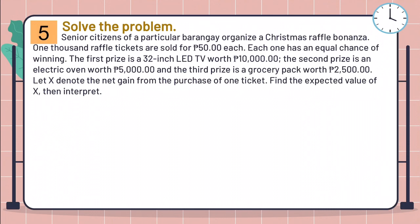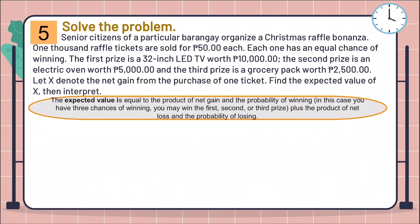Let X denote the net gain from the purchase of one ticket. Find the expected value of X, then interpret. The expected value is equal to the product of net gain and the probability of winning. In this case, you have three chances of winning. You may win the first, second, or third prize, plus the product of net loss and the probability of losing.